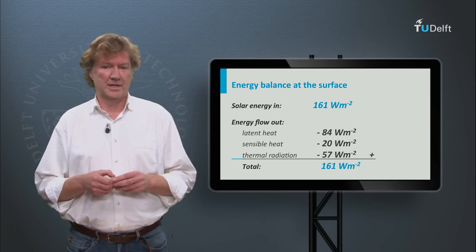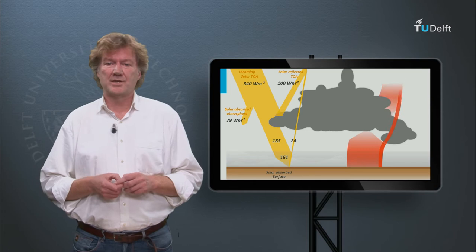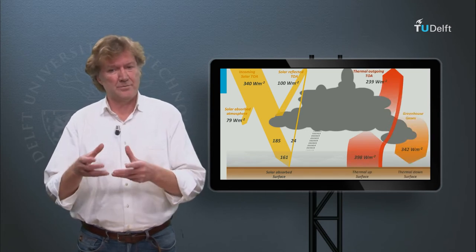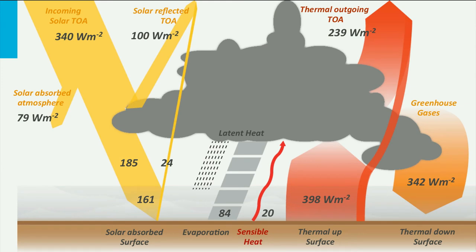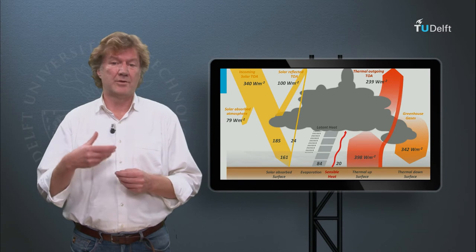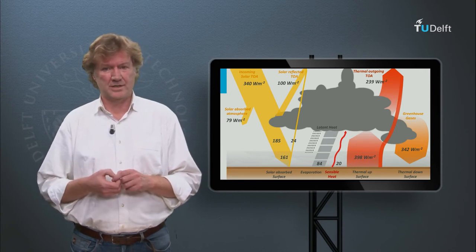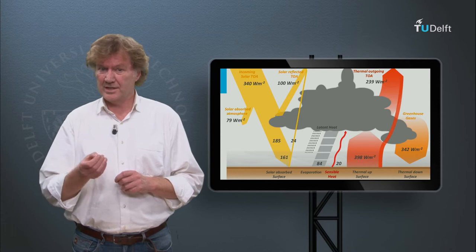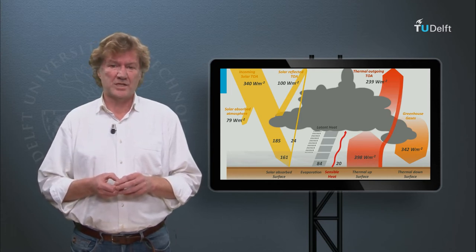Let's have a closer look at the energy balance. To understand the energy balance at the surface, we also have to look at the energy flows in the atmosphere. Clouds, aerosol and gases absorb radiation. The atmosphere gains energy by this absorption. The atmosphere also emits radiation, and the more it absorbs, the more it will emit. Part of this energy is directed towards the surface again. The net inflow of energy at the surface is therefore the summation of solar and atmospheric thermal radiation. We can expect some 57 watts per square meter of outgoing infrared radiation to compensate the incoming solar energy. Emission by greenhouse gases, clouds and aerosols add another 340 watts per square meter to this.